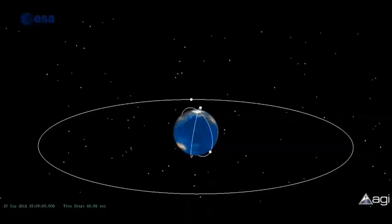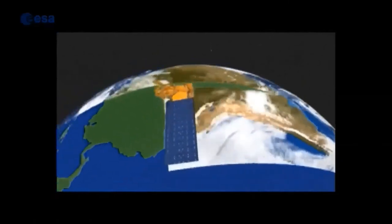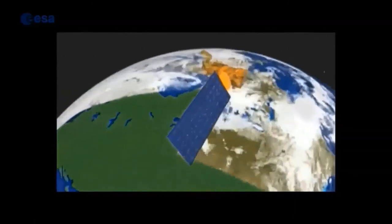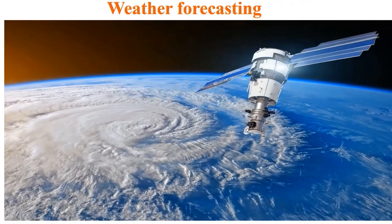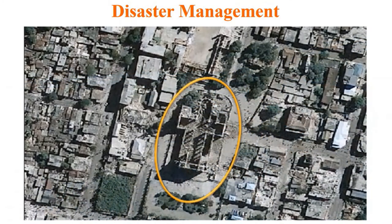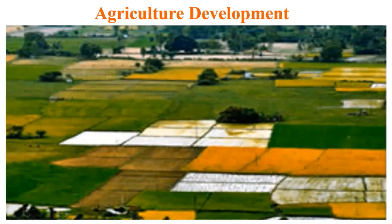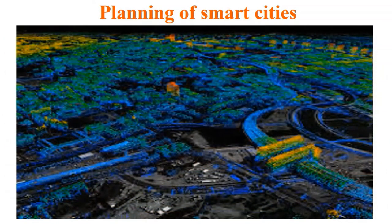Earth observation through satellite imaging provides foundational context and visualization of on-ground conditions. Images captured by geostationary and geosynchronous satellites are used for different applications, including weather forecasting, disaster management, agricultural development, human conflict, and study of astronomical observatory systems. Further, imaging data provides reliable information for engineers and planners for resource imaging and development of smart cities.